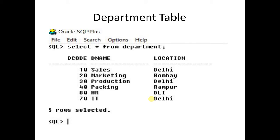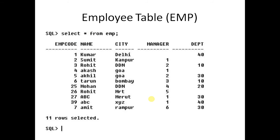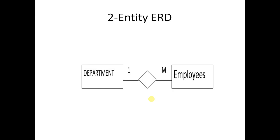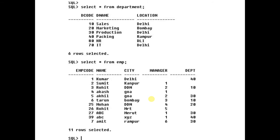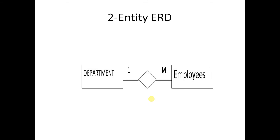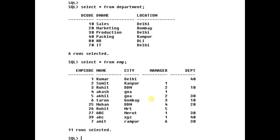Out of these entities, the following two tables are created. The first table is the department table and the second table is the employee table. So from this two-entity ER diagram — with a department entity, an employee entity, and a one-to-many relationship — these two tables are created.